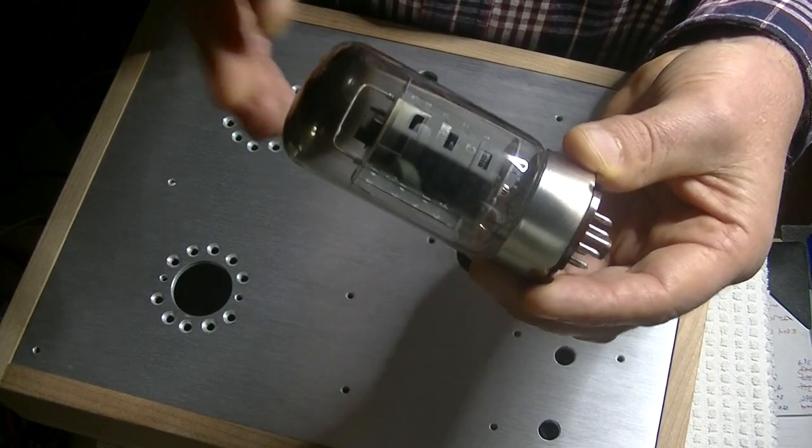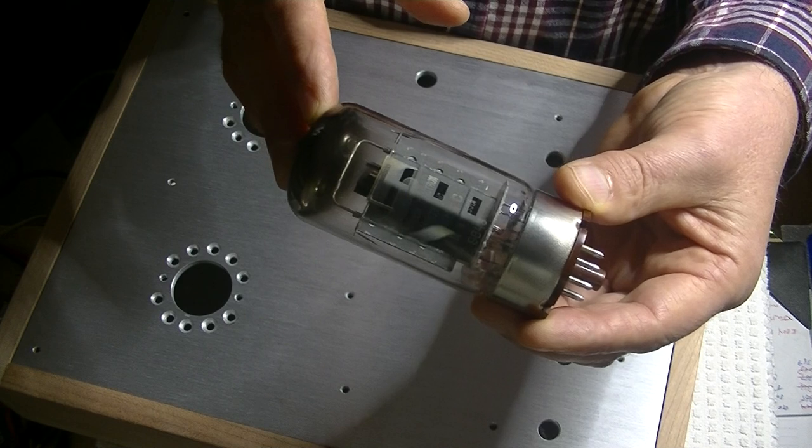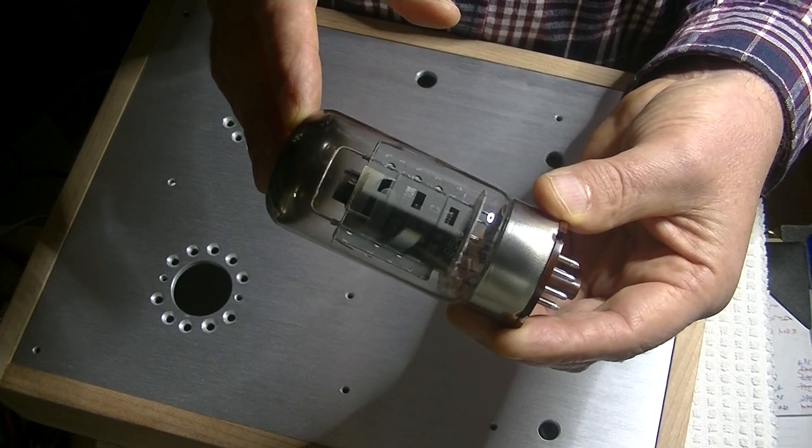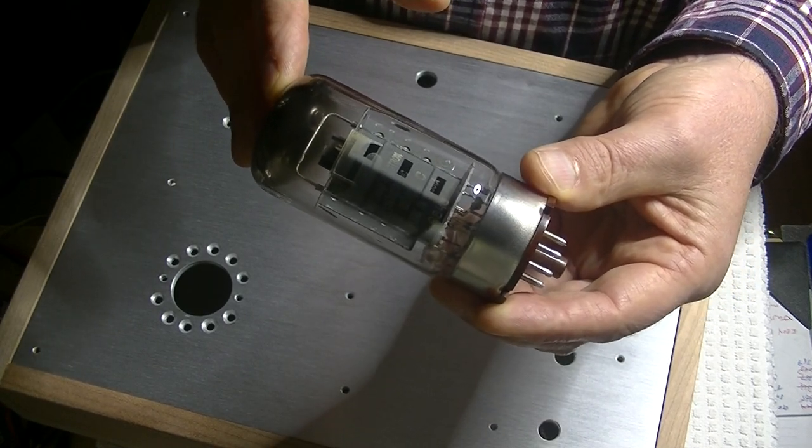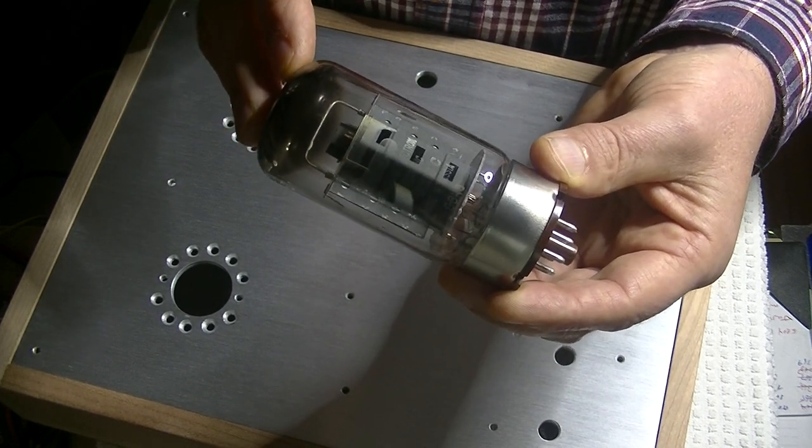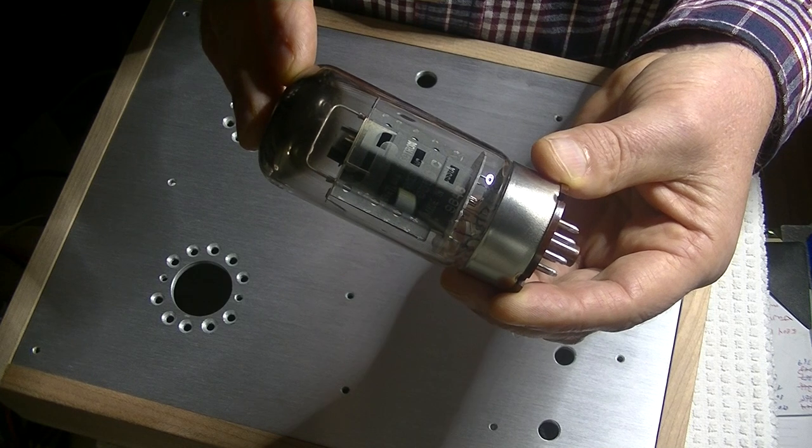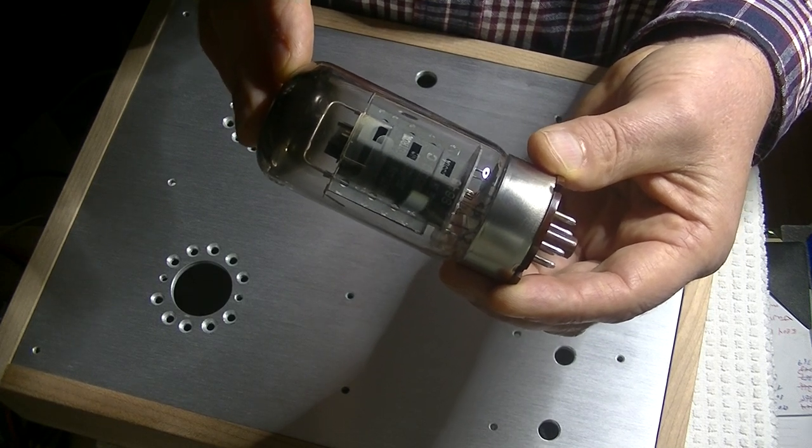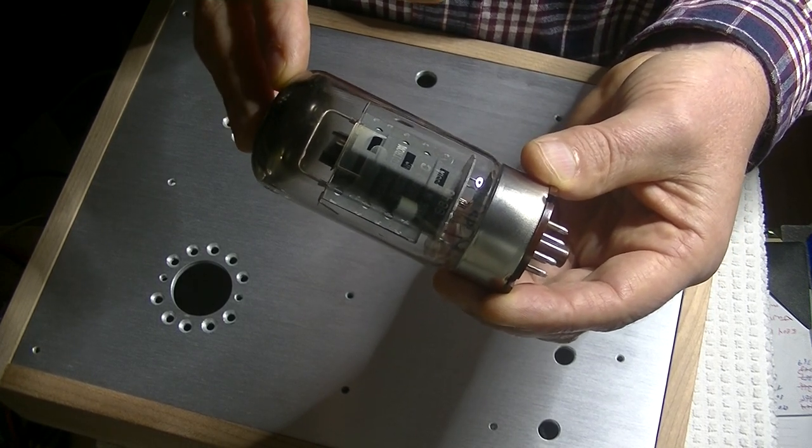A KT88 type, like the 6550, has a much better bass. It's got more power, and it tends to have more drive. But, many of the KT88 types have a very flat-sounding mid-range.